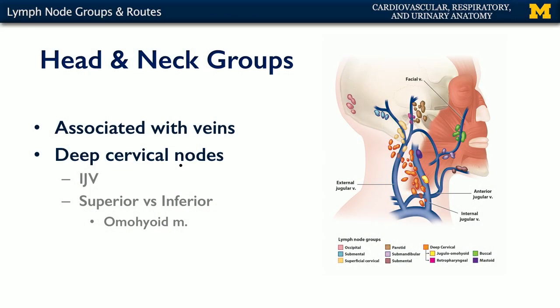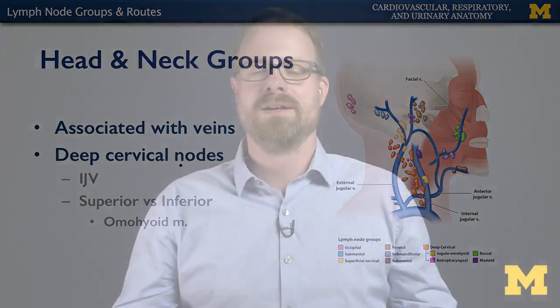One of the first places we'll start with respect to lymph node distribution is going to be the head and the neck. You may have some memory of a family member or a loved one, or maybe just a health care provider, whenever you're ill or as part of routine health maintenance, going about and palpating different parts of your body.